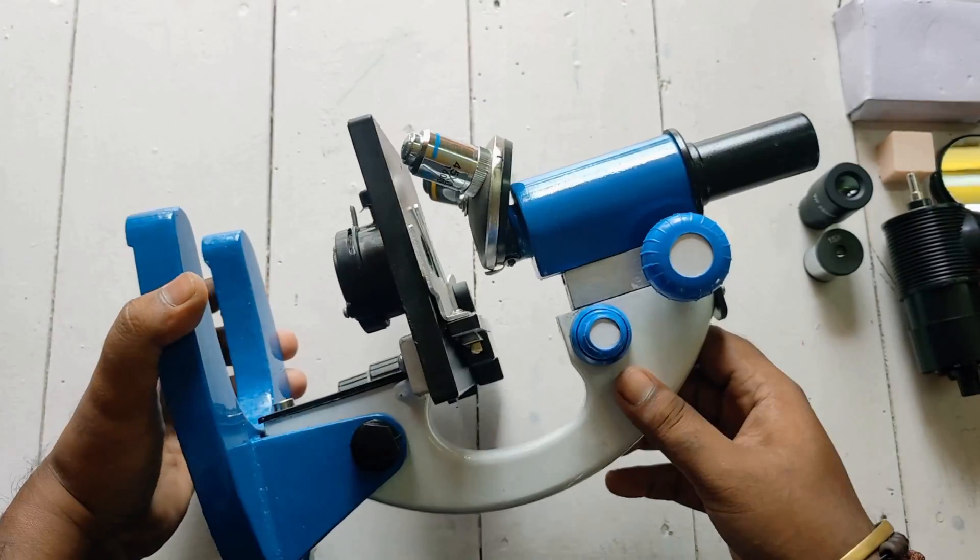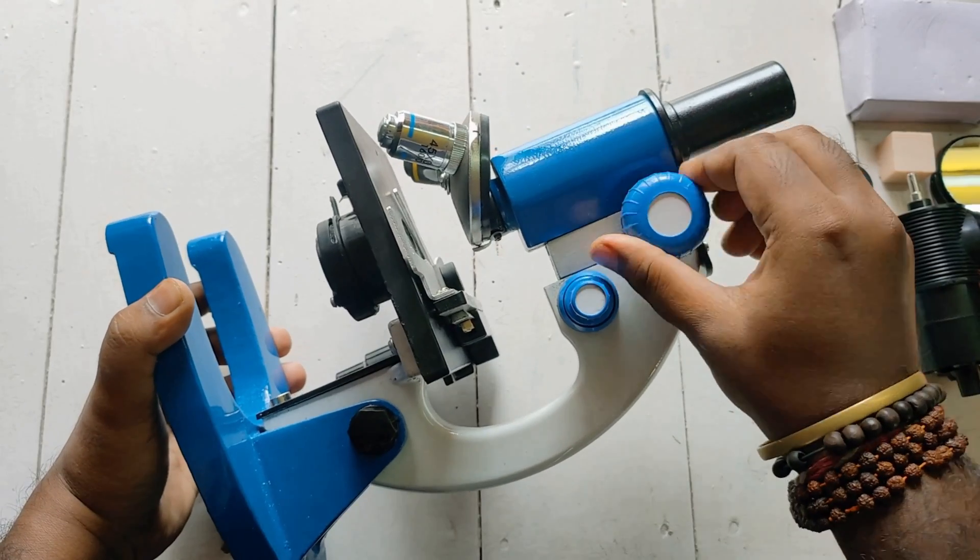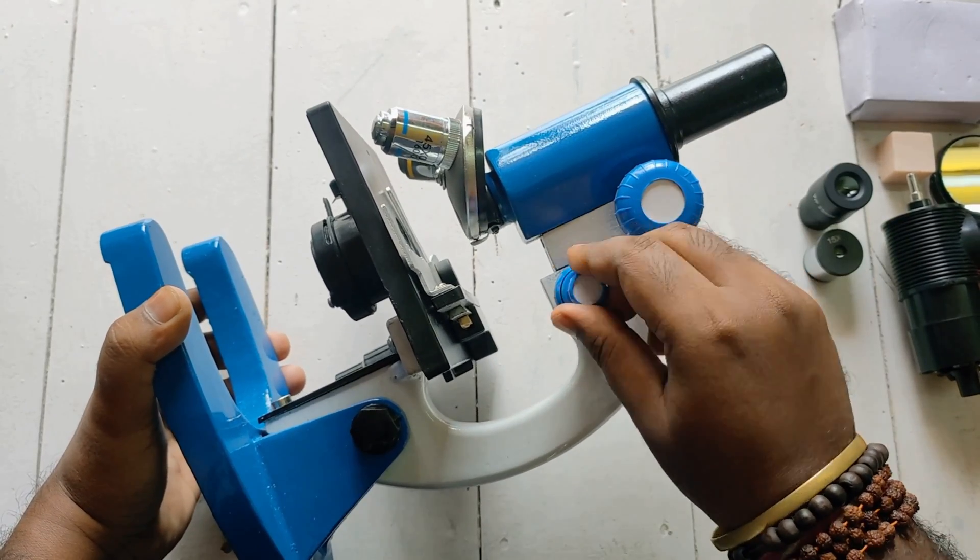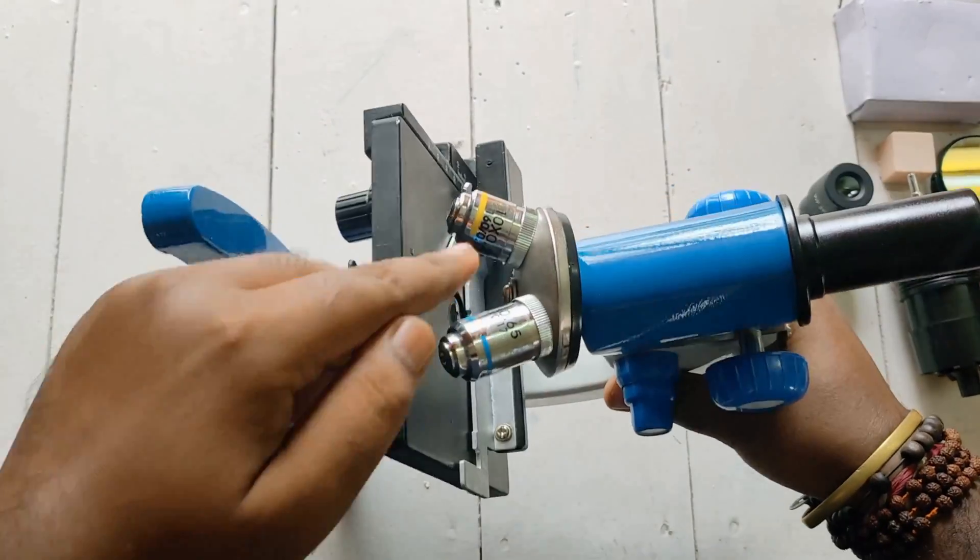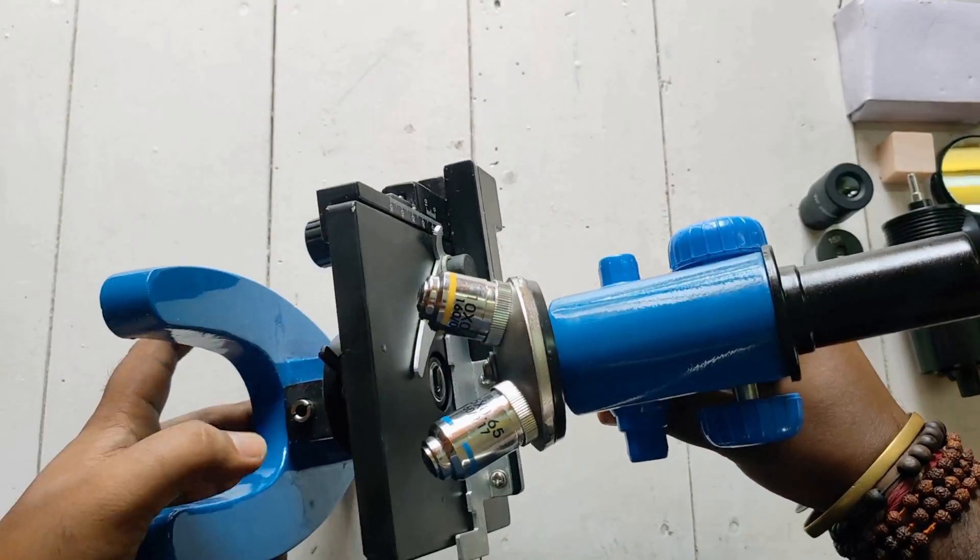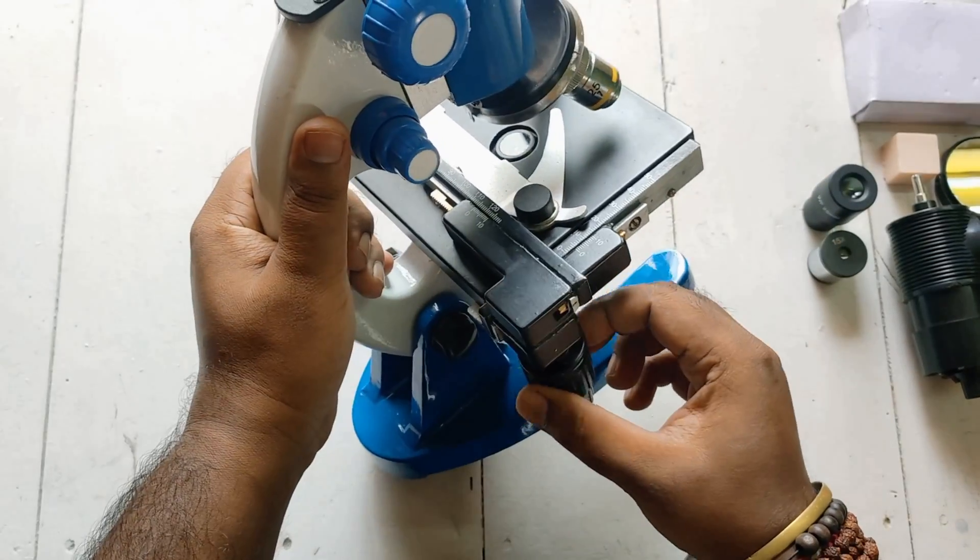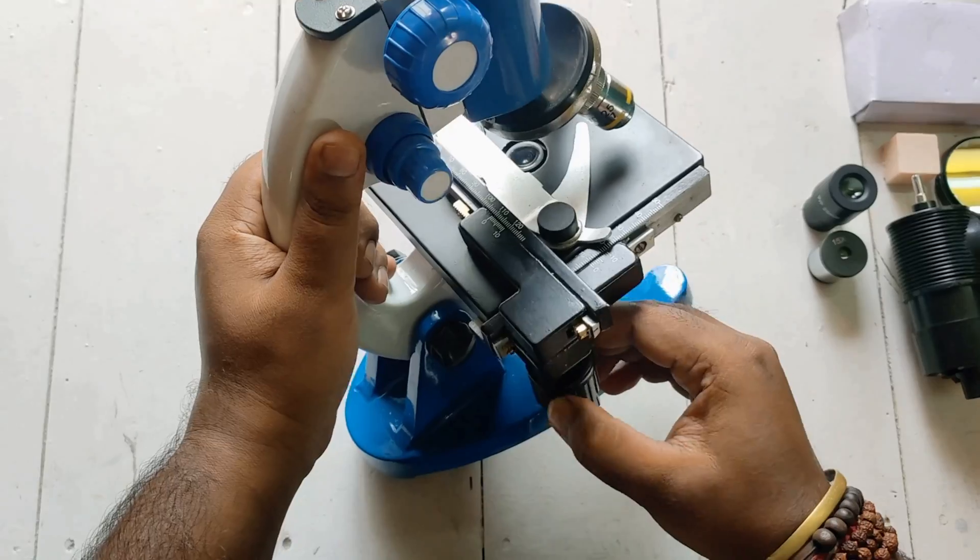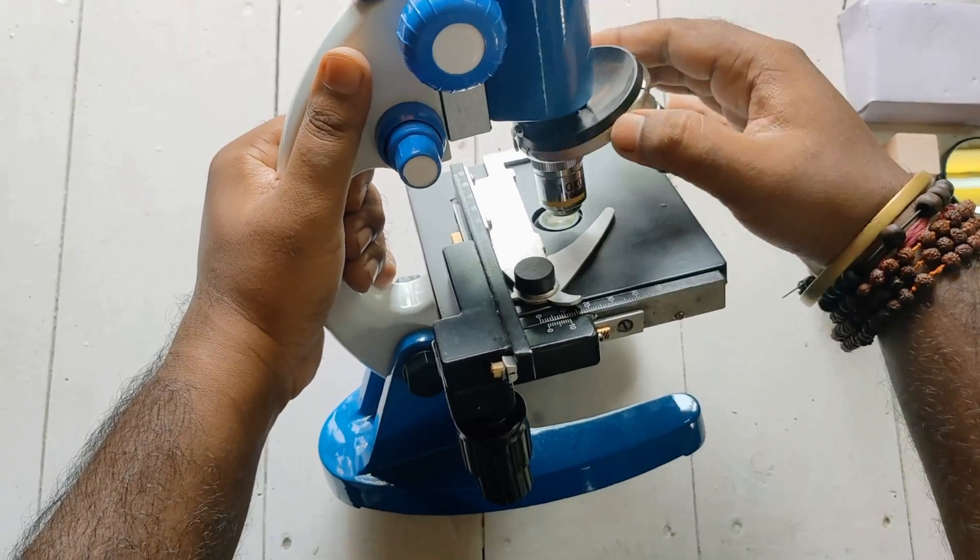Hope you all know about the microscope parts like this coarse adjustment knob, fine adjustment knob, condenser, stage, objective lens with 10x and 45x zoom, slide adjustment panel with moving knobs up-down and left-right. Here is the revolving nosepiece.